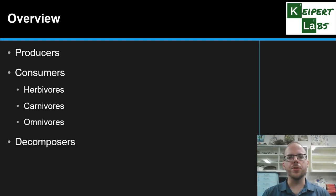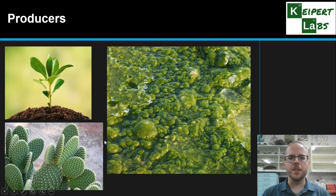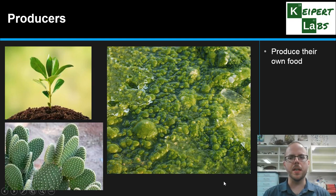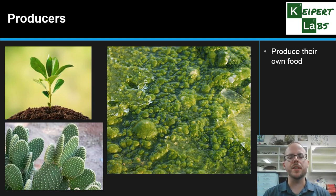So let's start by looking at producers. You can see some examples — three different examples here. You notice that there's a strong colour pattern: we're looking at green, typically green. So we're talking about green plants. We've got a normal flowering green plant, green algae, and a cactus represented here. The key thing about a producer — what defines an organism as a producer — is that it must produce its own food; it doesn't rely on other organisms for a source of energy.